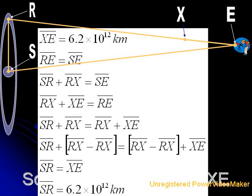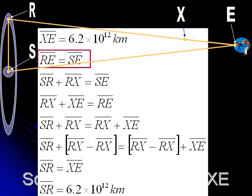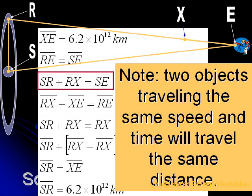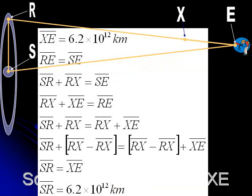Let's do some geometry with what we already know about XE. First, recall that we have already determined that XE equals 6.2 trillion kilometers, and that because we were using an isosceles triangle, RE equals SE. Now, because the second bundle of light traveled SR and RX in the same amount of time that the first bundle of light took to travel SE, we know that the sum of those two, SR plus RX, equals SE.